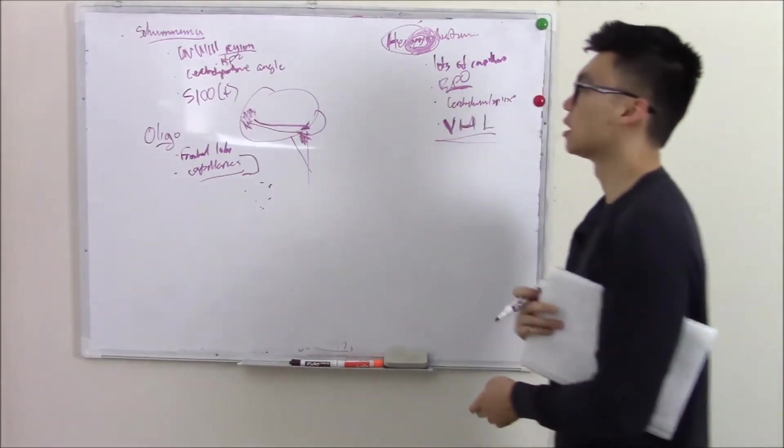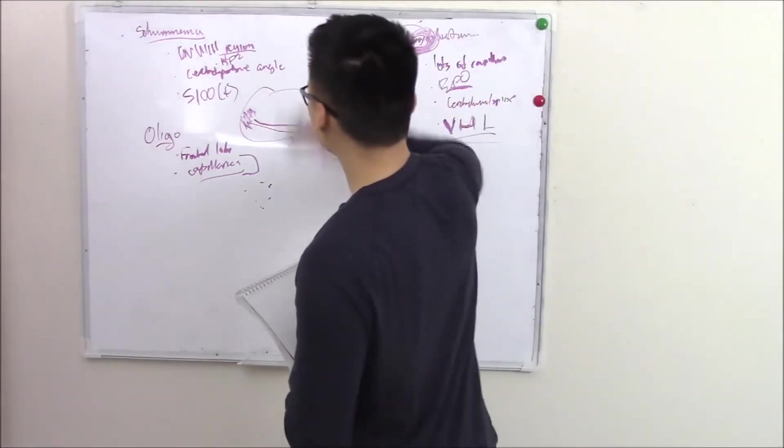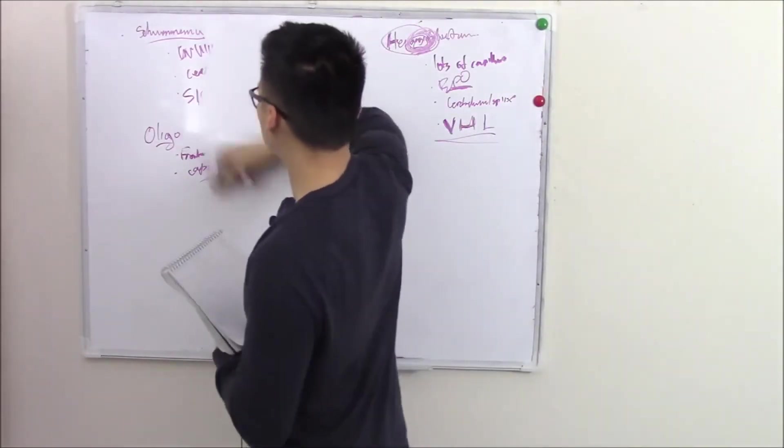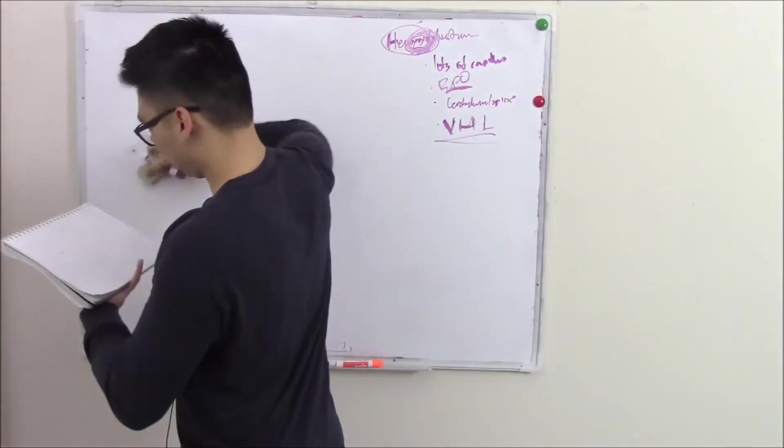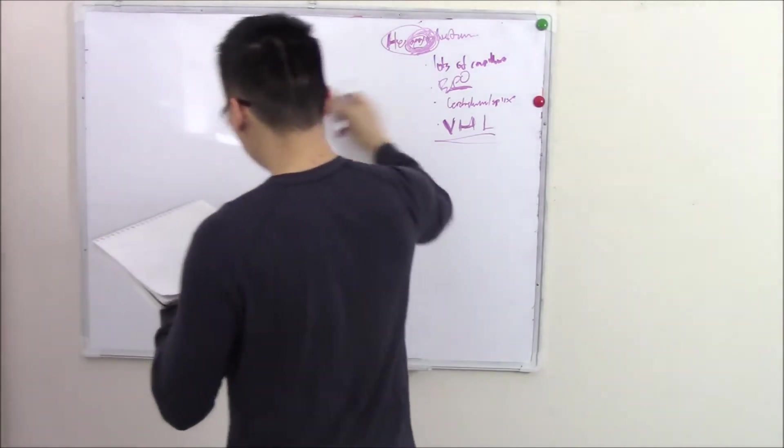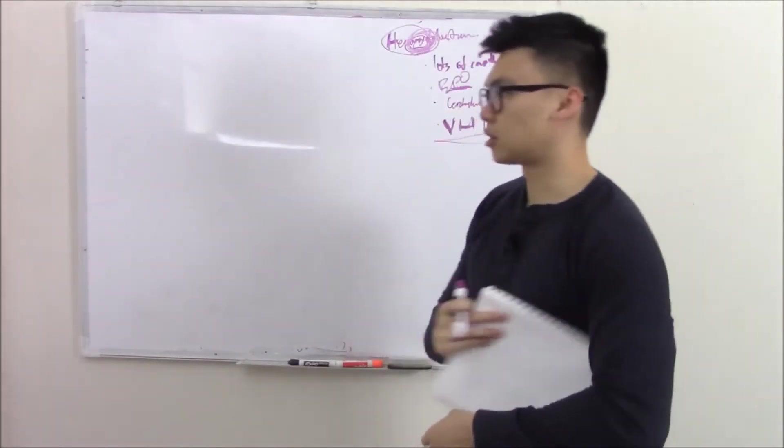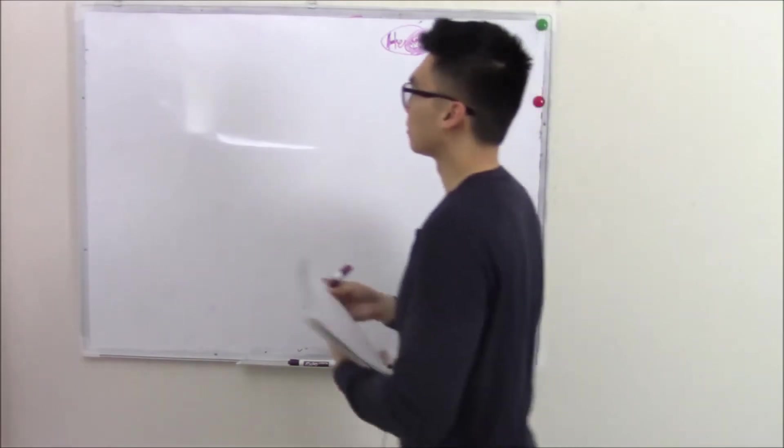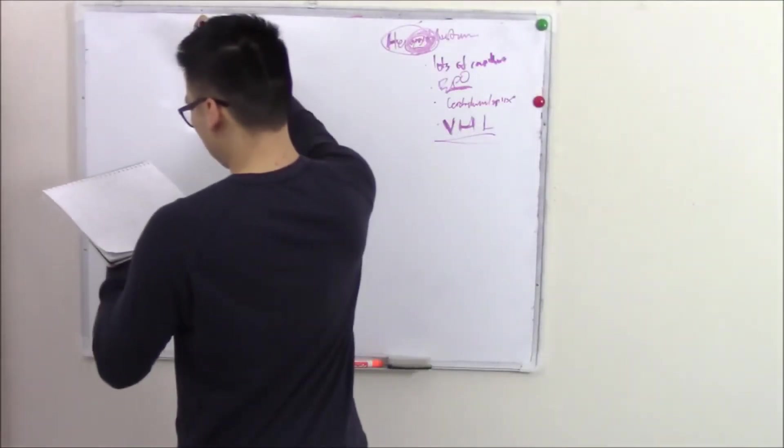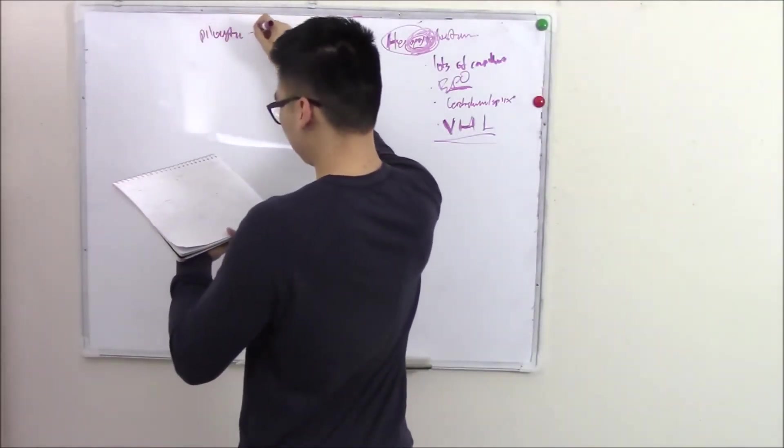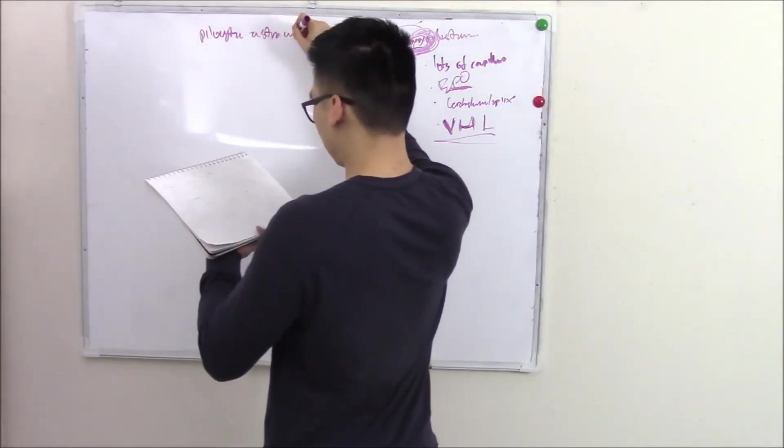Now let's talk about kid tumors. Tumors in your childhood is going to be slightly different. The most common is also going to be an astrocytoma. But this time, it is called pilocytic astrocytoma.